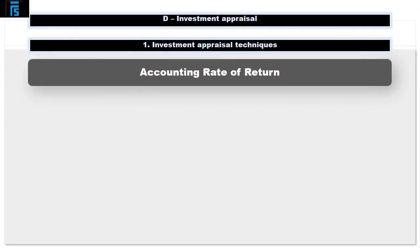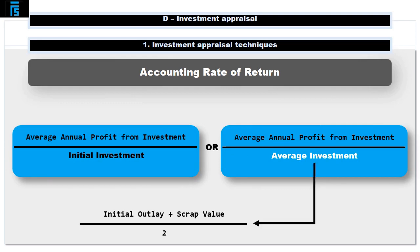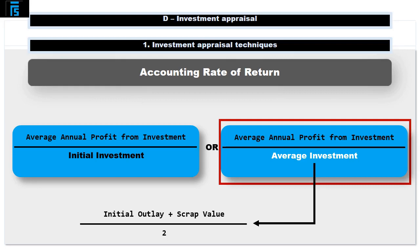The accounting rate of return is the percentage return a profit generates on average per year. It's also known as return on investment. The formula is: average annual profit from investment over initial or average investment. Where average investment equals initial outlay plus scrap value, divided by two. Our examiner prefers to divide by average investment, and this will be specified in the question.